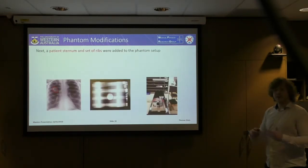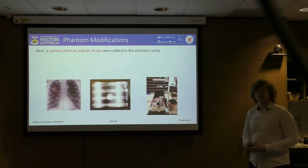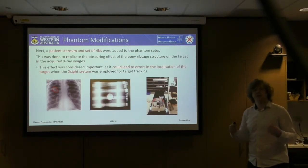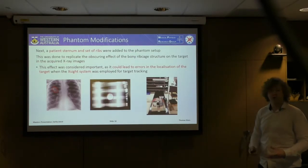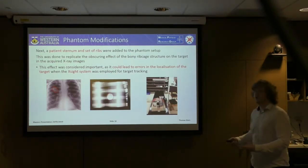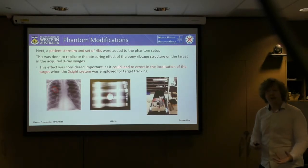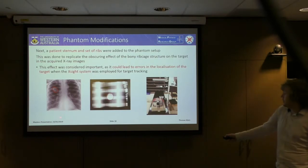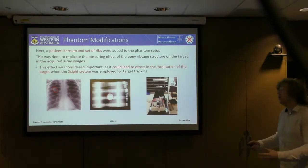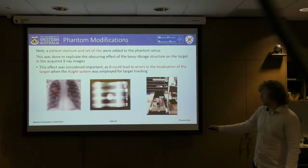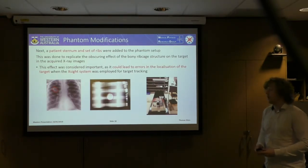We also needed to add a sternum and ribs to the lung phantom to replicate the obscuring effect of bony structures on the target. This is particularly important because it could lead to errors in the target tracking accuracy of the Excite system as opposed to the fiducial-based system. This effect is illustrated for an anonymous patient CT scan where the ribs are obscuring the tumour from view, and we've tried to replicate this effect in our phantom images.